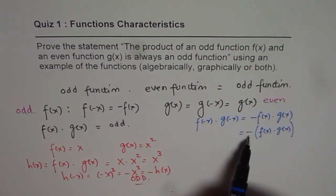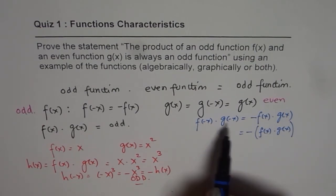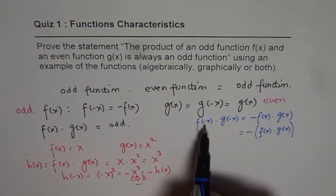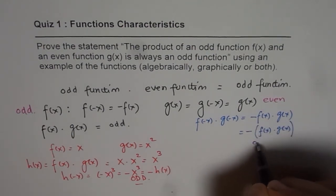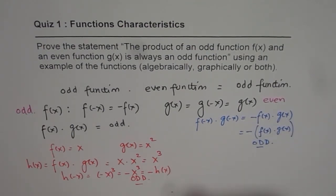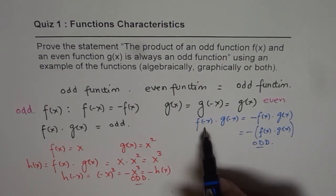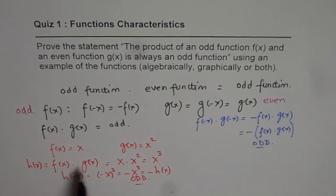Since their product is negative, f(-x) times g(-x) is negative of f(x) and g(x). We say that they are odd. So that is algebraic proof for all functions in general. This is for a specific function.